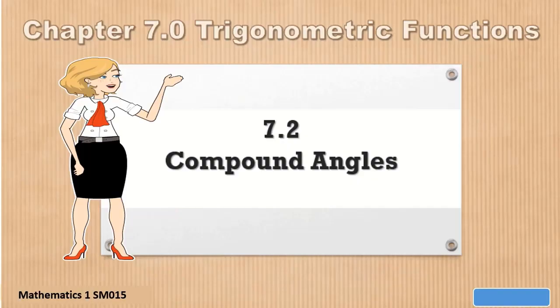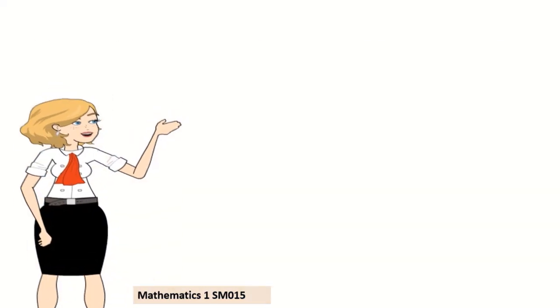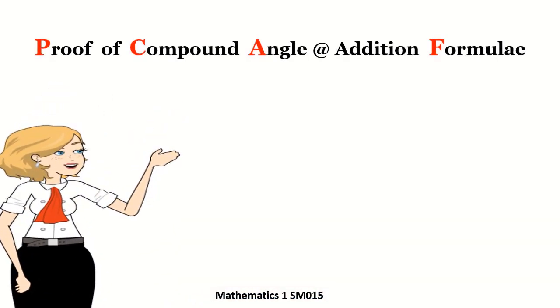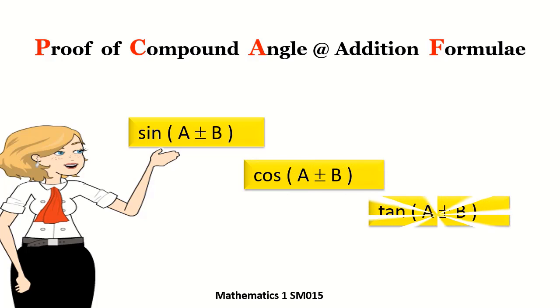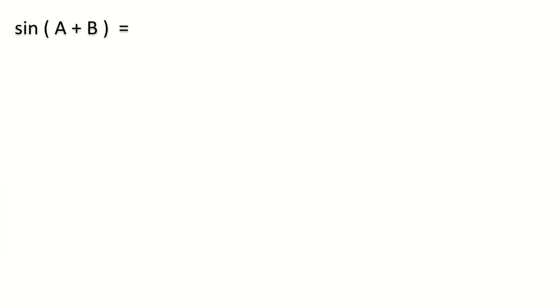Today we are in lesson 7.2 compound angles. We are going to prove what is called the compound angles or addition formulas for sines, cosines and tangents. We start with what is sine of A plus B and cosine of A plus B in terms of the sines and cosines of these angles separately.